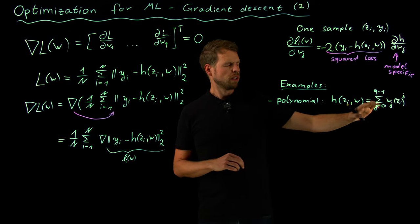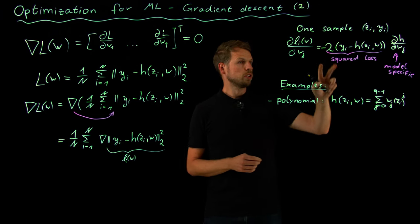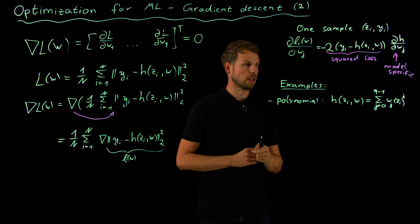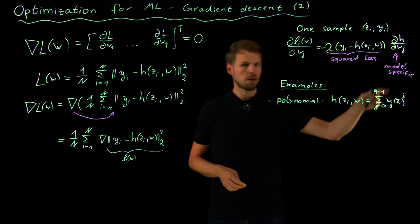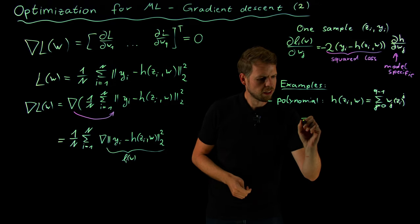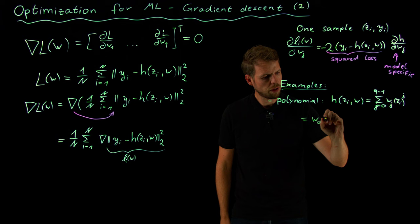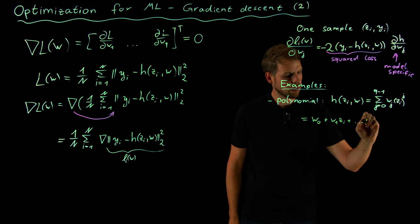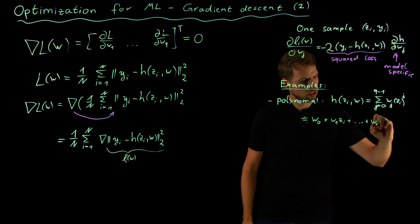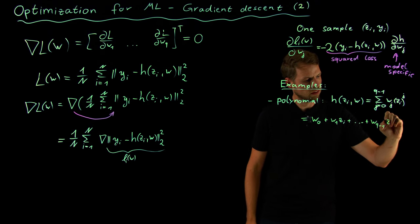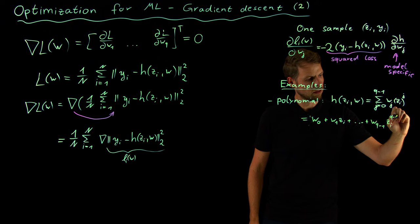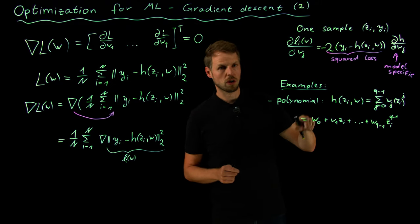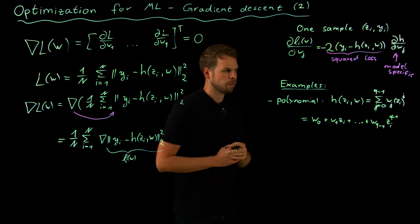And so what we have seen now is that this gives us a polynomial model. And what you need to do now is you can simply insert this model specific derivative precisely here. So what we see now is this gives me, let me make this explicit: this is w_0 plus w_1 times z_i plus and so on until we are at w_{q-1} z_i to the power of q minus 1. So it's q dimensional in the parameter space, but because we have this constant term the maximum exponent is q minus 1.